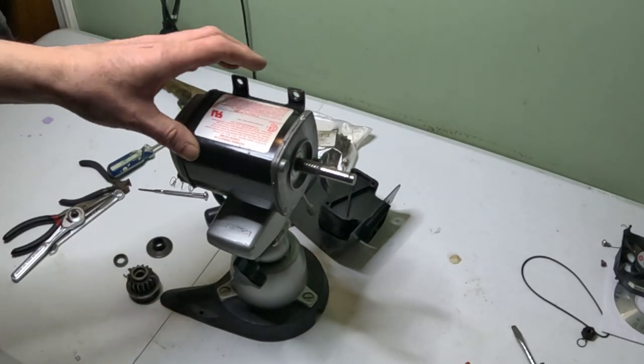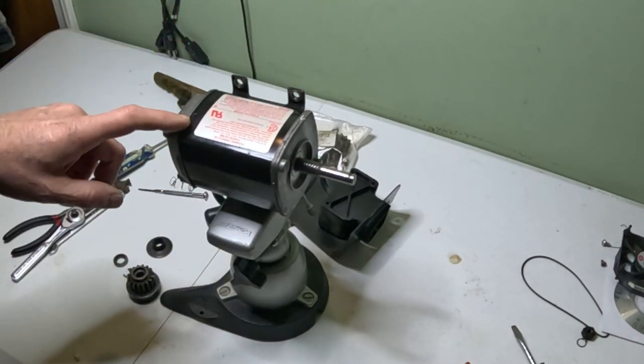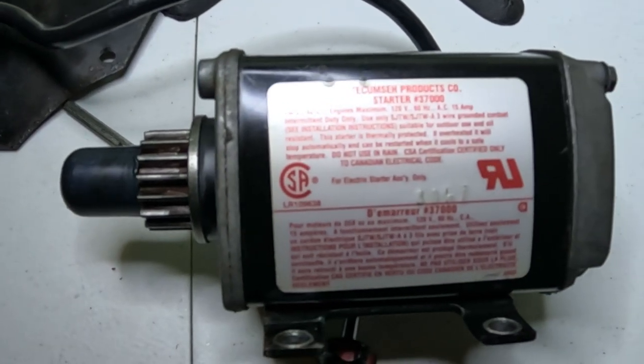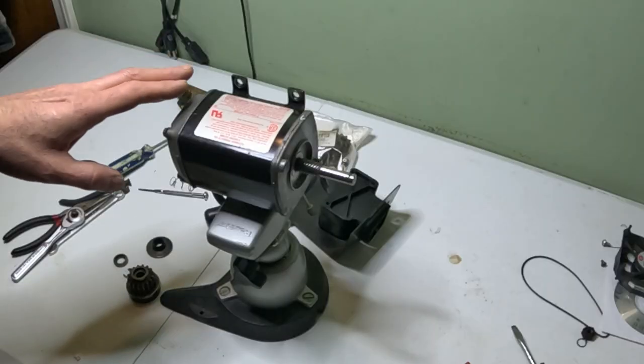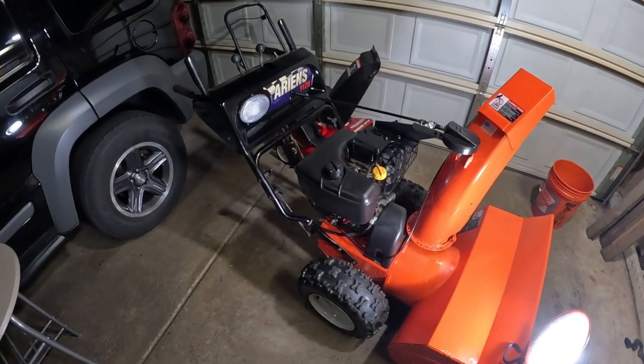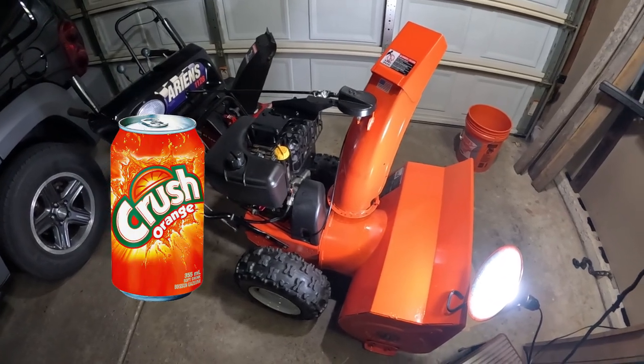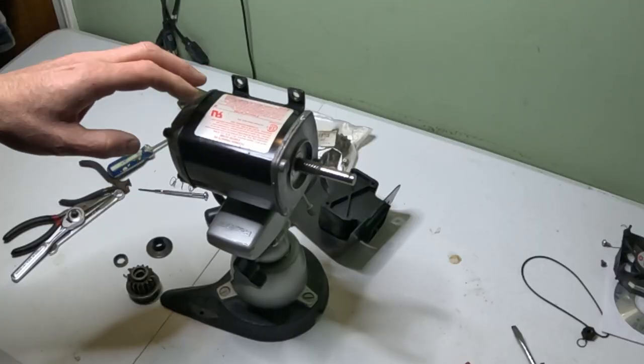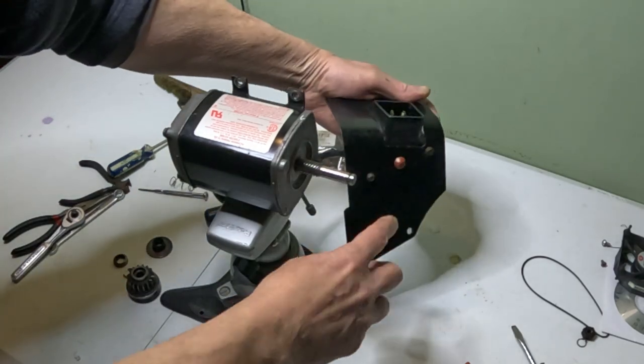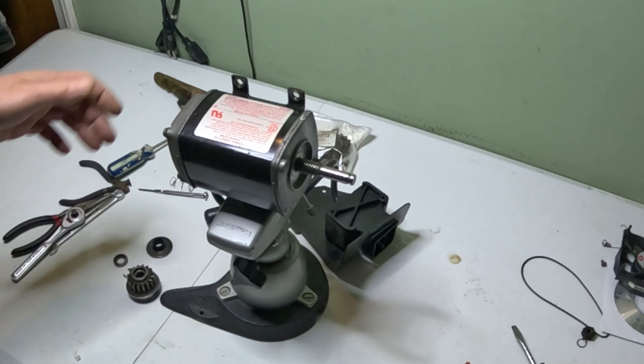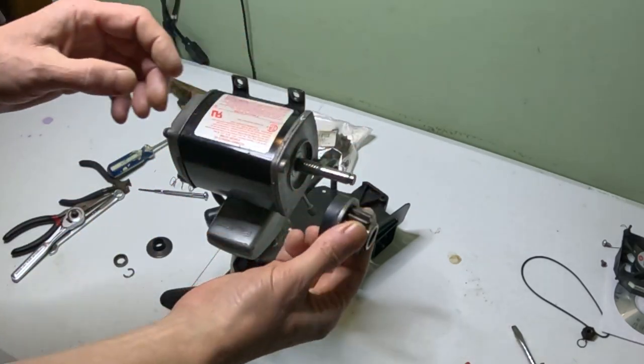All right guys, welcome to the channel. Welcome back, hope everyone had a good Thanksgiving. What I have here today is a starter motor, a Tecumseh model number 37000, from an Ariens 1128 snowblower nicknamed Orange Crush. The issue we're having is you press the button and the motor works, but the gear is not engaging.